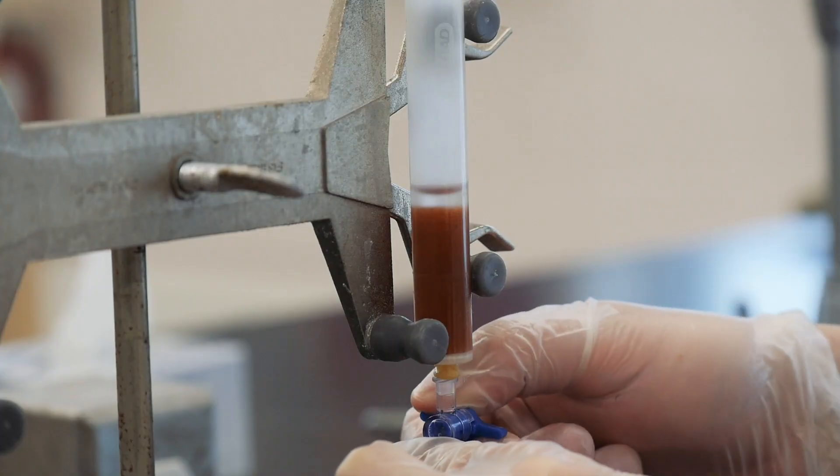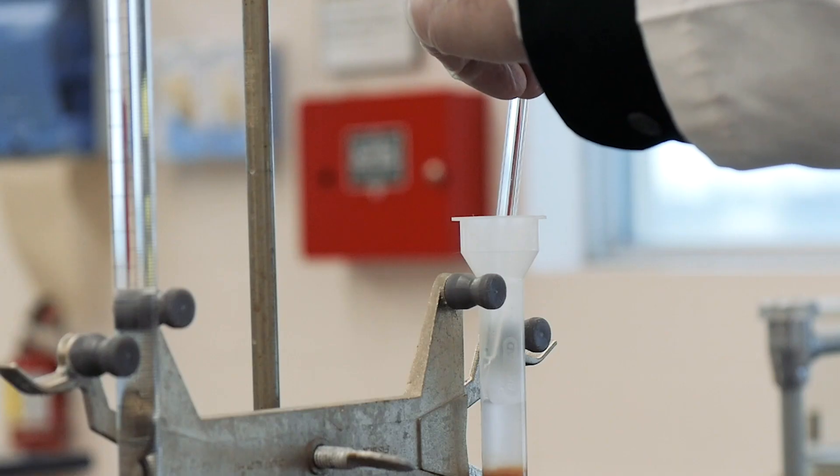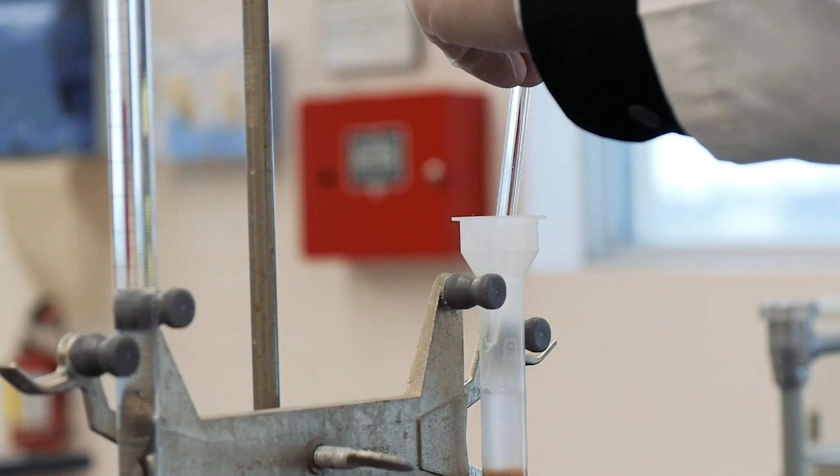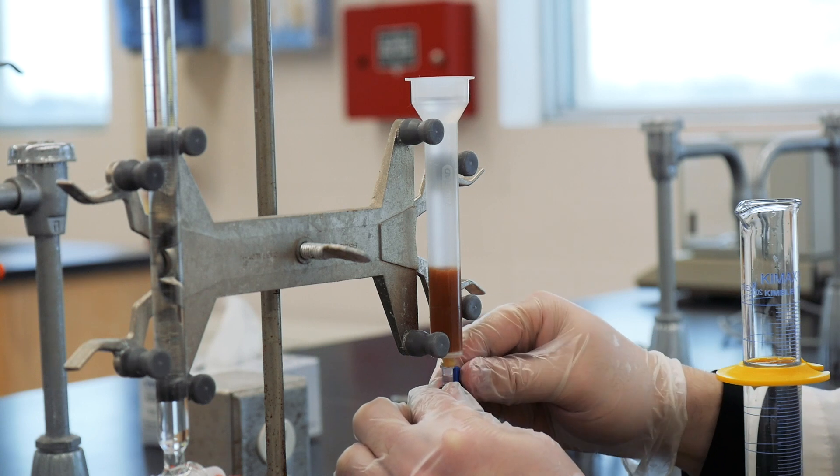When that's done, wash the excess acid off the column with 200 mils of deionized water by adding it slowly to the top of the column and allowing it to drain until just above the level of the resin.